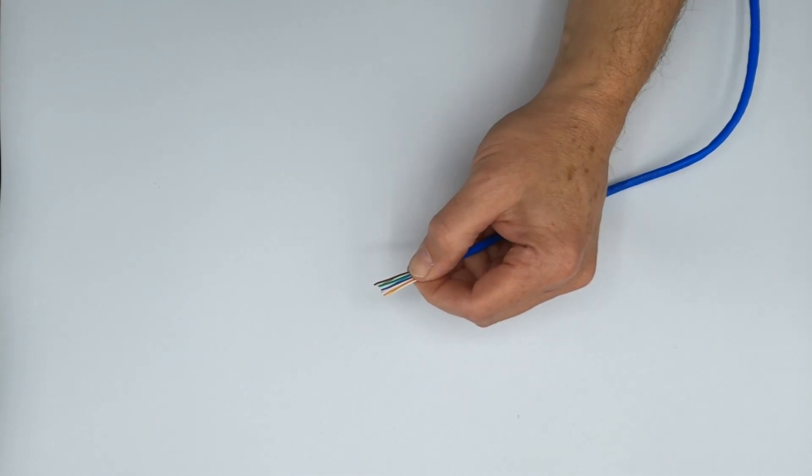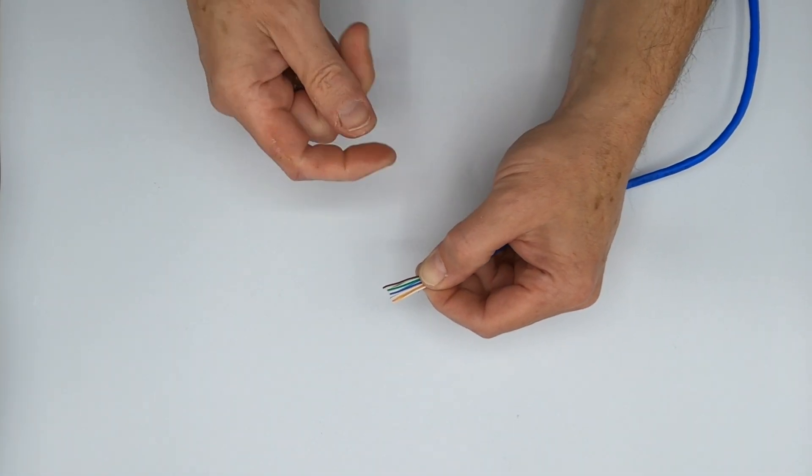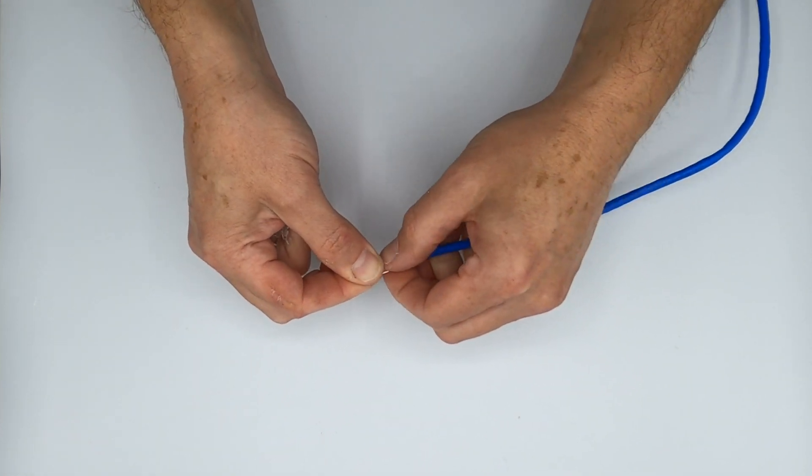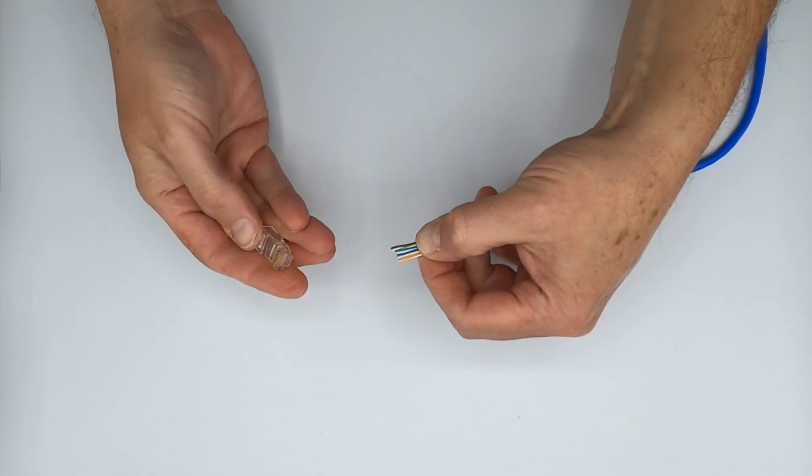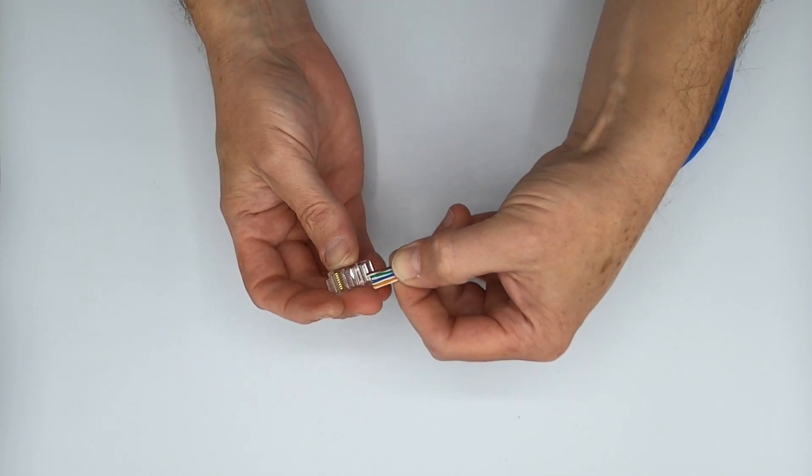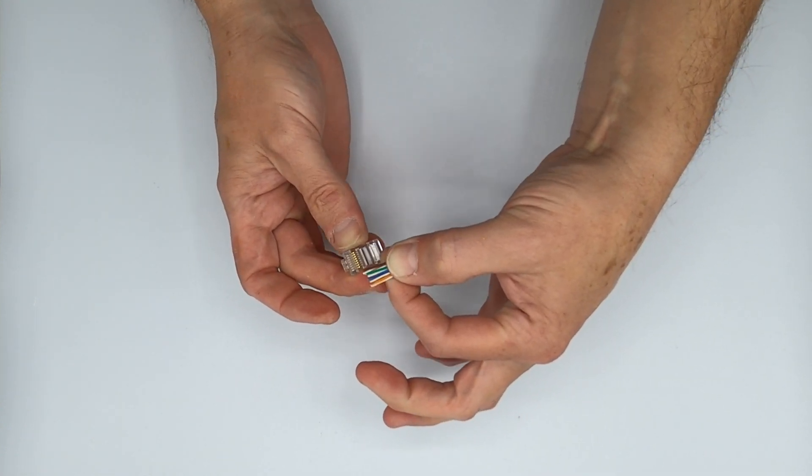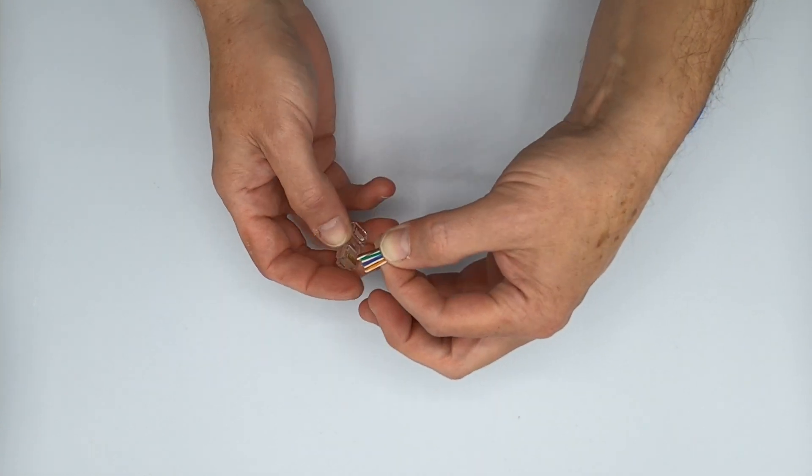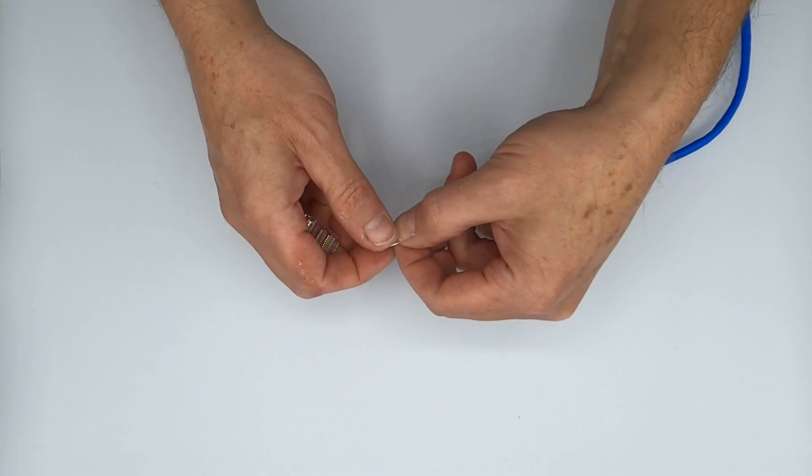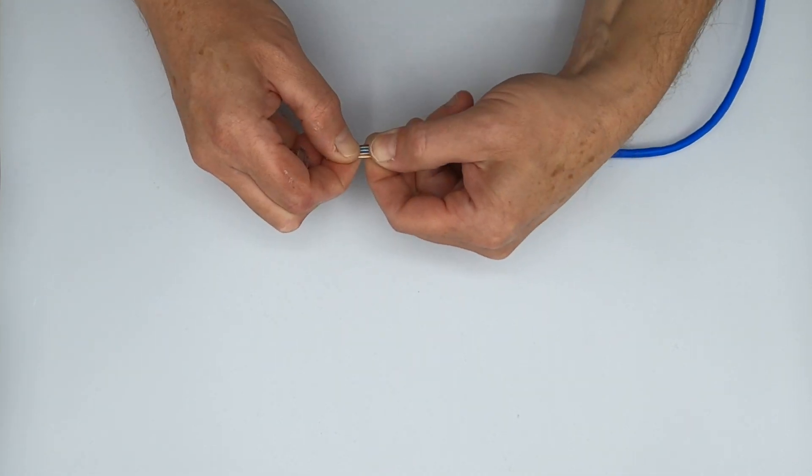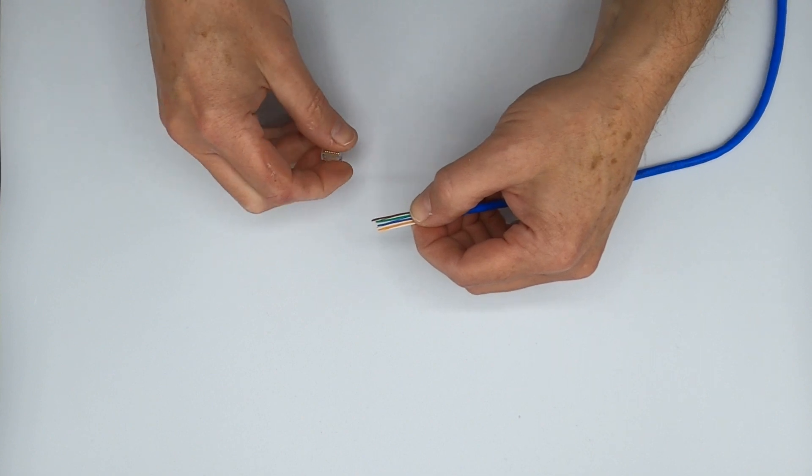Now normally, if you were working with a pass-through plug, you would flush cut here. You would choke up on it and flush cut here, and then you would push this whole conductor stripe into the plug and through, and then it would come out the nose. But that's not how these guys work. With these guys, it's going to be a little bit different.